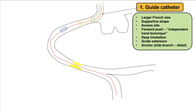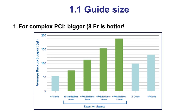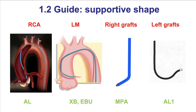Starting with guide catheter support, there are several ways to enhance it. The first is to use a larger lumen guide catheter — 8 French provides more support than 6 or 7 French. The second is to use supportive shapes: for the right coronary in any complex PCI, the Amplatz Left is the guide of choice; for the left, the EBU and XP are the guides of choice; for right-sided bypass grafts, the multipurpose guide; and for left-sided bypass grafts, the Amplatz guide.